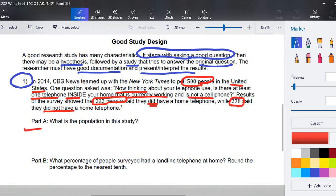So starting with Part A, what is the population of the study? The population needs to be pretty descriptive, and it would be not just 500 people, but all people in the United States of America.